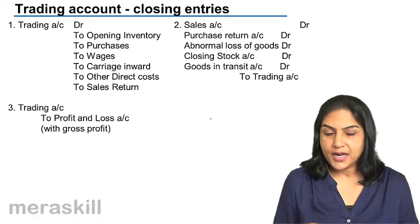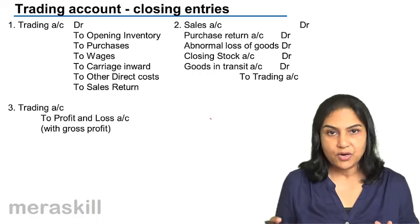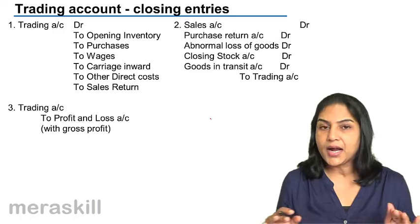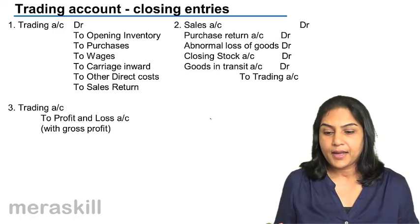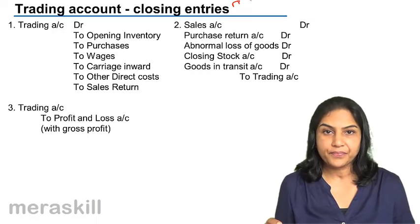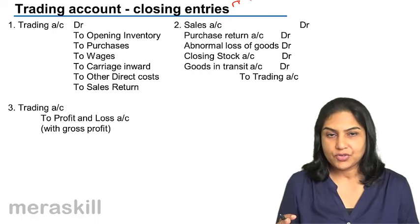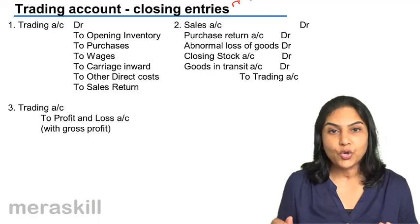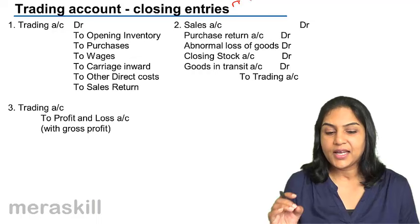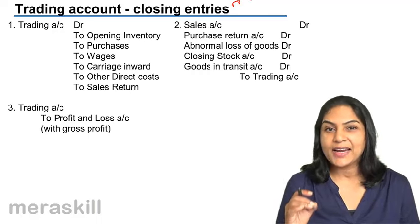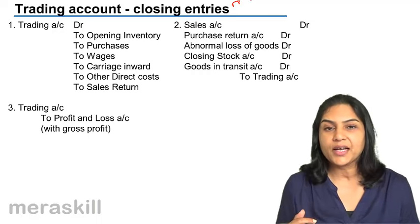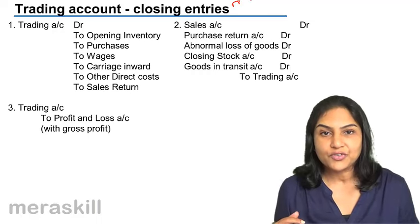If you notice, the trading account is a final account. It is prepared through certain closing entries. All our nominal accounts — income and expense accounts — need to be closed at the year end. The purchases and direct cost accounts are closed by transfer to the trading account. The sales account is also closed by transfer to the trading account.